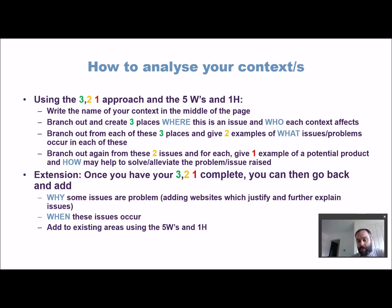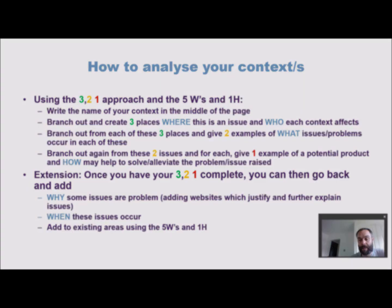You might do further research on the internet and look at existing solutions to those problems, or use the internet to back up and justify some of the things you're saying to prove they are real and feasible problems. That's the three-two-one process using the five W's and one H. Now I'm going to use some existing contexts from last year to show you what it looks like in real life — then you can have a go and apply it to your own context. Good luck.